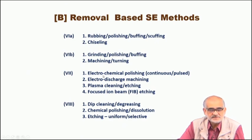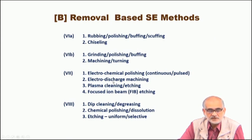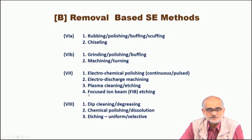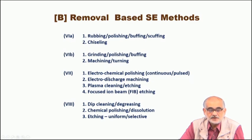Removal-based surface engineering methods can also employ electrochemical means. For example, it can be simply electrochemical polishing or removal from the surface — electro polishing — either continuous or through pulsed mode. We can do electro discharge machining; similarly we can do plasma cleaning and etching, focused ion beam etching, and so on. This is very precise, but is confined to a very small region — certainly less than a micrometer, typically anything between 10 nanometers to a few hundred nanometers. So something can be as small and precise as ion beam etching, or on the other hand as large and wide as electro polishing, where we are removing from a fairly large surface area.